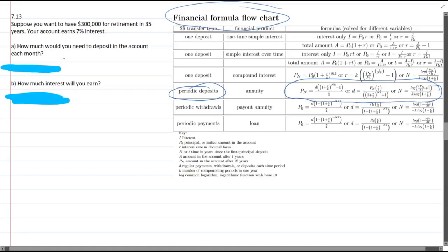Now this financial formula flowchart is in chapter 7, you can see it in there, and it's labeled and super useful. So which one do we use? How much would you need to deposit? So this one is how much you need to deposit, so we want to find P0.